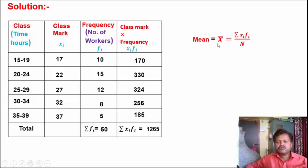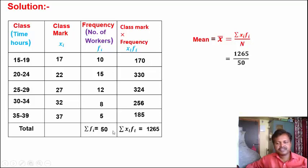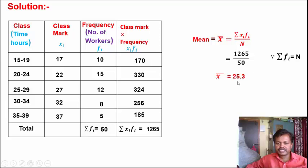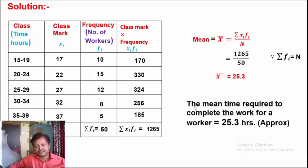Now calculate the mean: X-bar = Sigma Xi Fi upon n. Putting in the values: 1265 upon 50 (where n = Sigma Fi = 50). Therefore X-bar = 25.3. The mean time required to complete the work for a worker is 25.3 hours approximately.